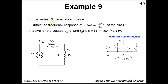Let's look at example 9. For the series RLC circuit, the first part is to obtain the frequency response H(ω), which is the frequency response of the system H(ω) equal to Vr over V of the circuit. The second question is to solve the voltage Vr and Ir if V(t) is given as exponential minus 3t times U(t).